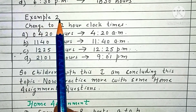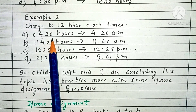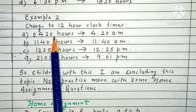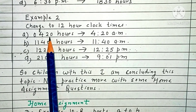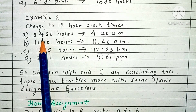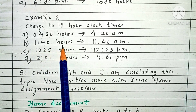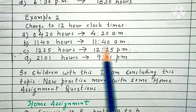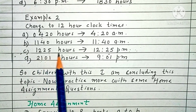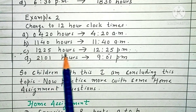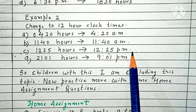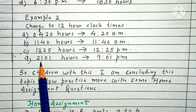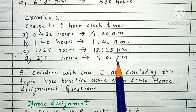Example 2: Change the 24-hour clock time to 12-hour clock times. Part A: 0420 hours is 4:20 AM, as the hours are less than 12. Part B: 1140 hours is 11:40 AM. Part C: 1225 hours is more than 12, so it is 12:25 PM. Part D: 2101 hours — 21 minus 12 is 9, so it is 9:01 PM.